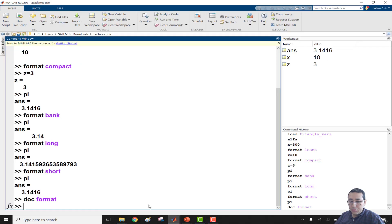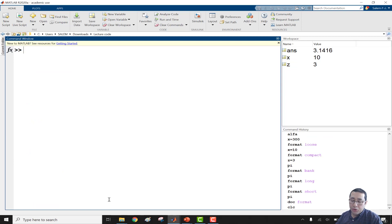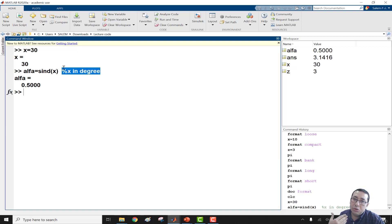For example, let's clear the screen with CLC, which is the next note for us. CLC will clear the window, and then we can write x equal to 30. And then, for example, alpha is equal to sind of x. But if we just give some space, and then percentage sign, and then write like x in degrees, enter, no problem because this is just a comment. So this is for us, not for the PC.